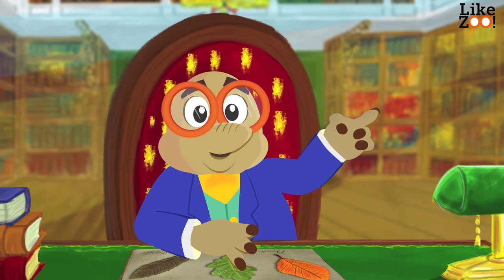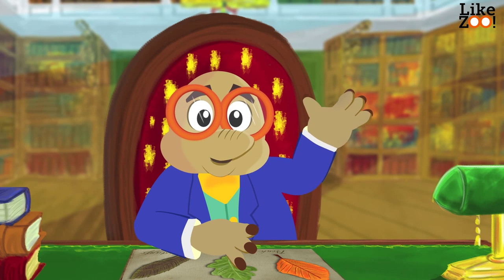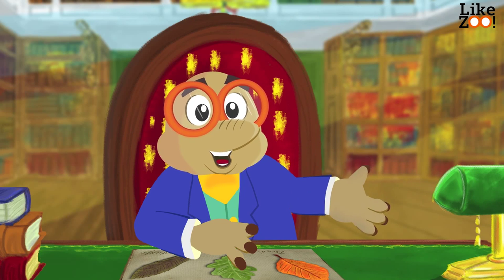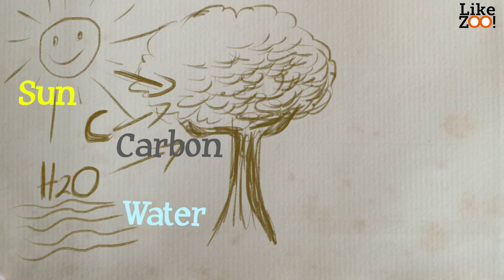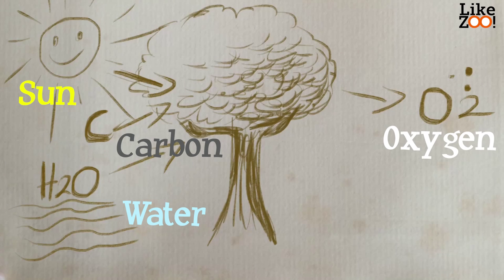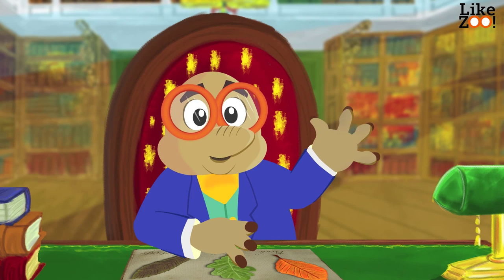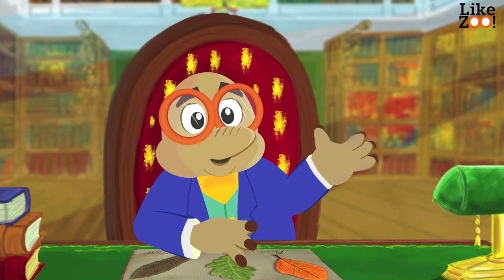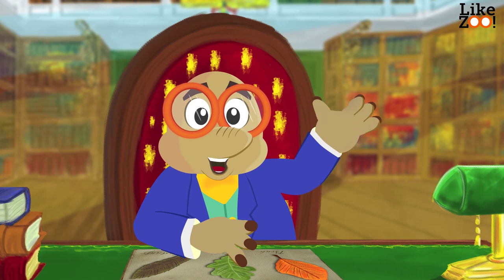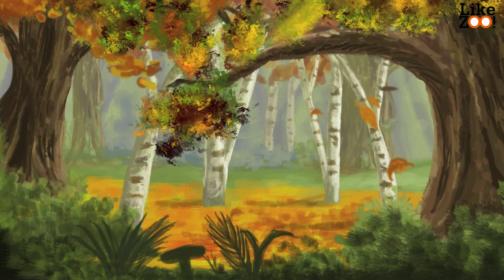But why do the leaves of the trees change their color? And why do they fall? Trees live from the sun, water and carbon. Carbon is what you exhale. Trees convert carbon into oxygen, so that animals and man can breathe. They also produce sugars, which help the trees to grow, and plants and mushrooms that grow around the tree.